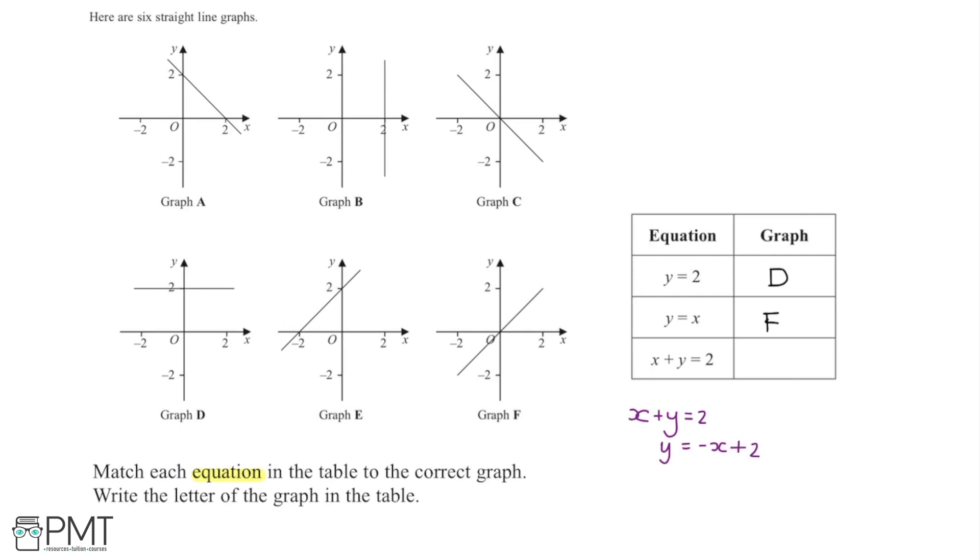Looking at this, the coefficient of the x term gives a gradient of -1 and the y-intercept here, the c value, is 2. So we need a graph that has a y-intercept of 2 and a gradient of -1.